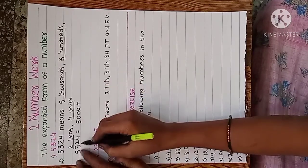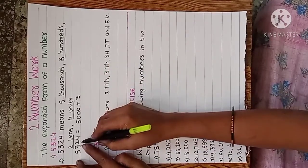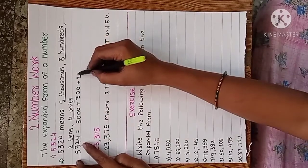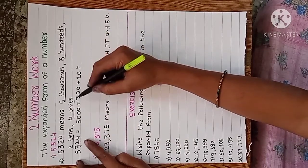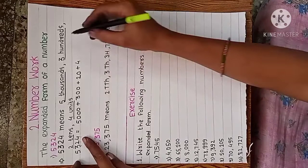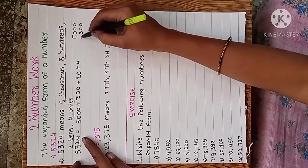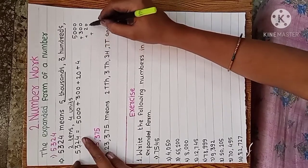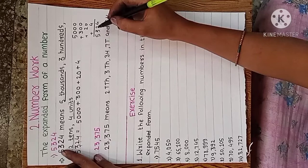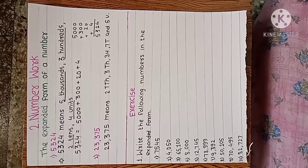Five thousand means we write one, two, three zeros after the five. Then three — how many digits after three? One, two — then we write zero here. Then two — how many digits? One — write one zero. And at the last, four — how many digits after that? Nothing — so we write only four. If we do addition: five thousand plus three hundred plus twenty plus four, we get the number. This means expanded form is the addition of the place value of each digit.